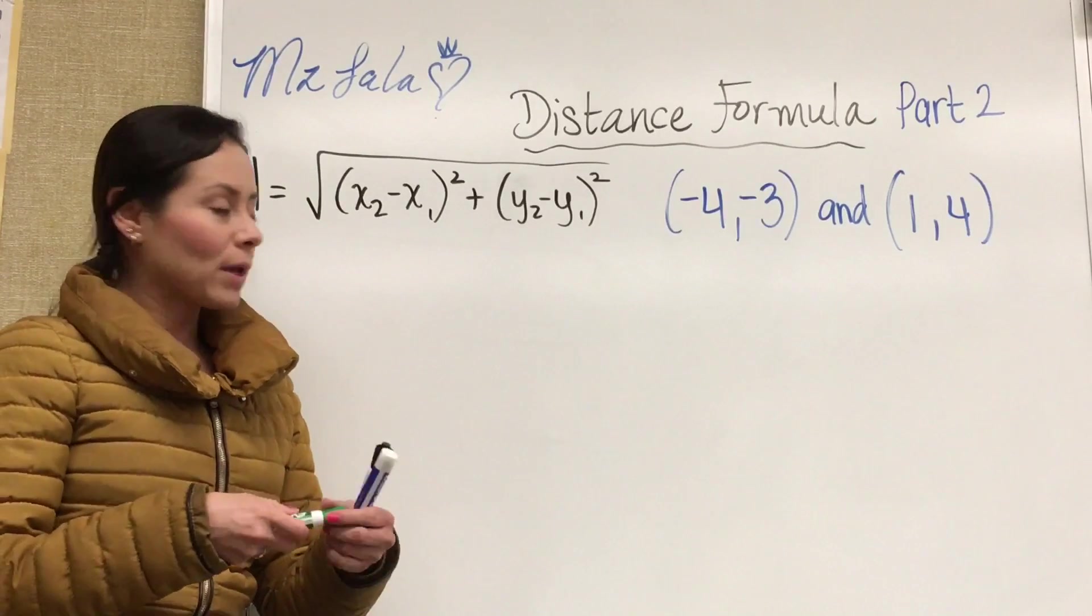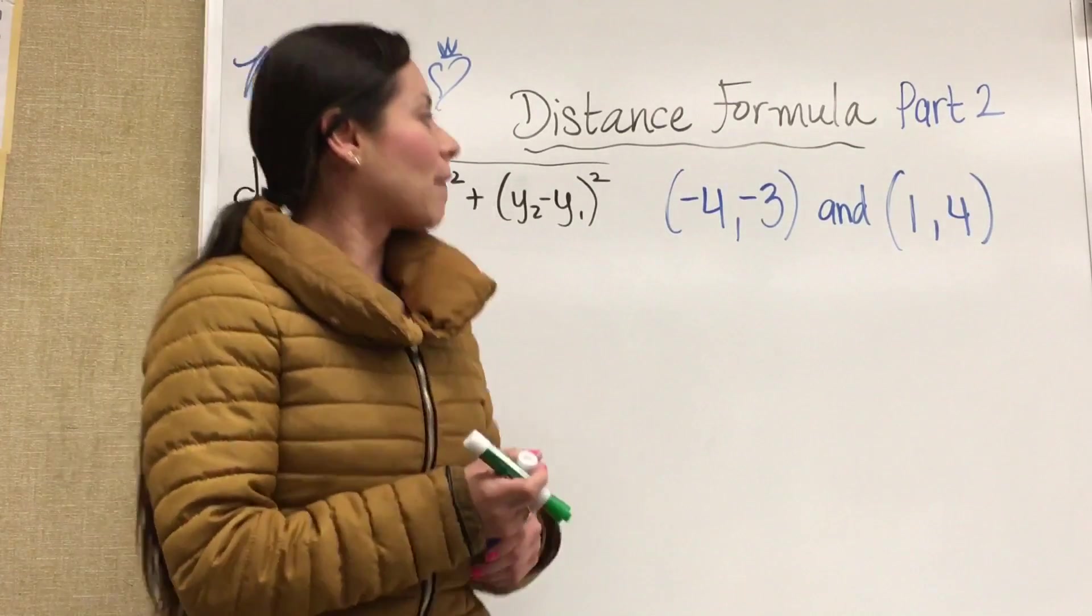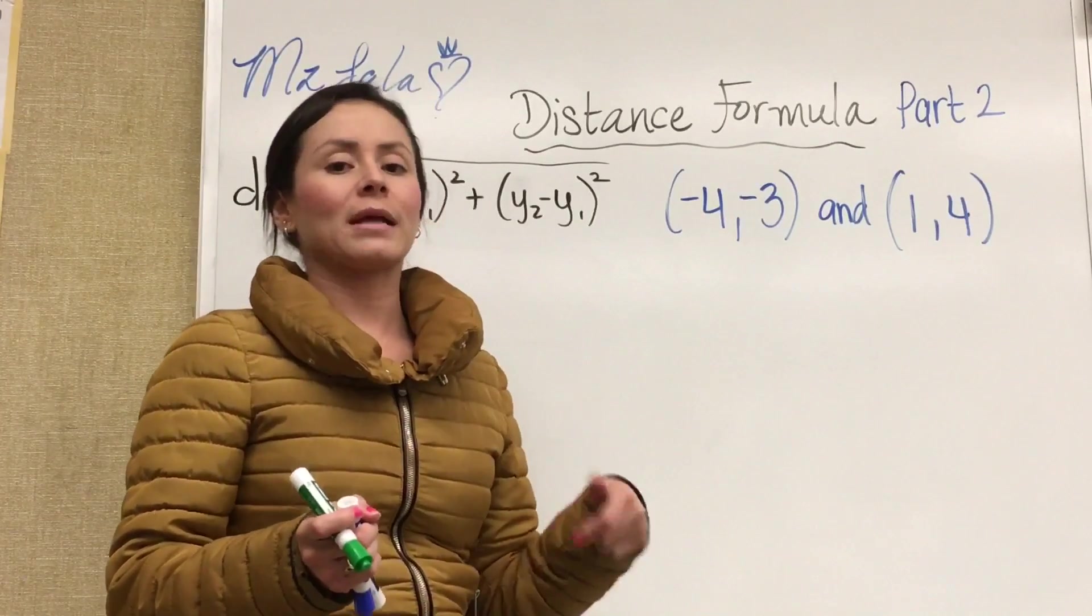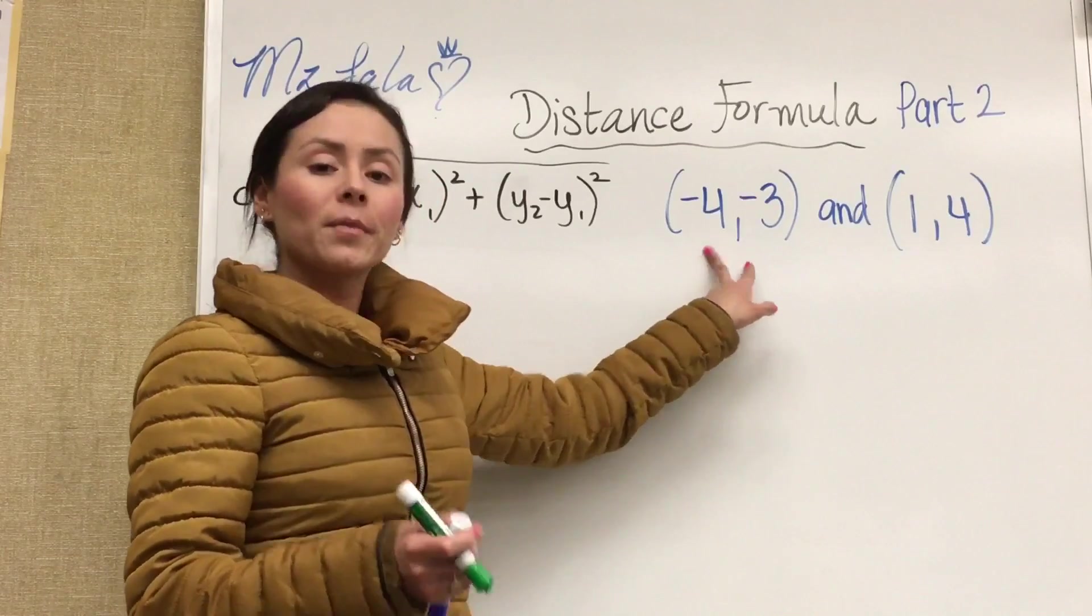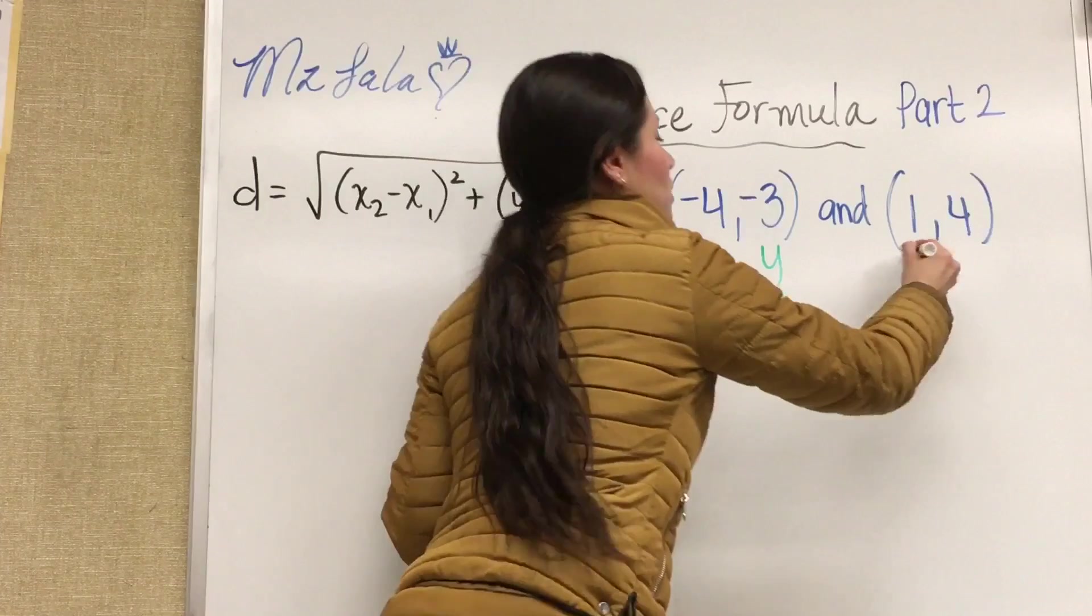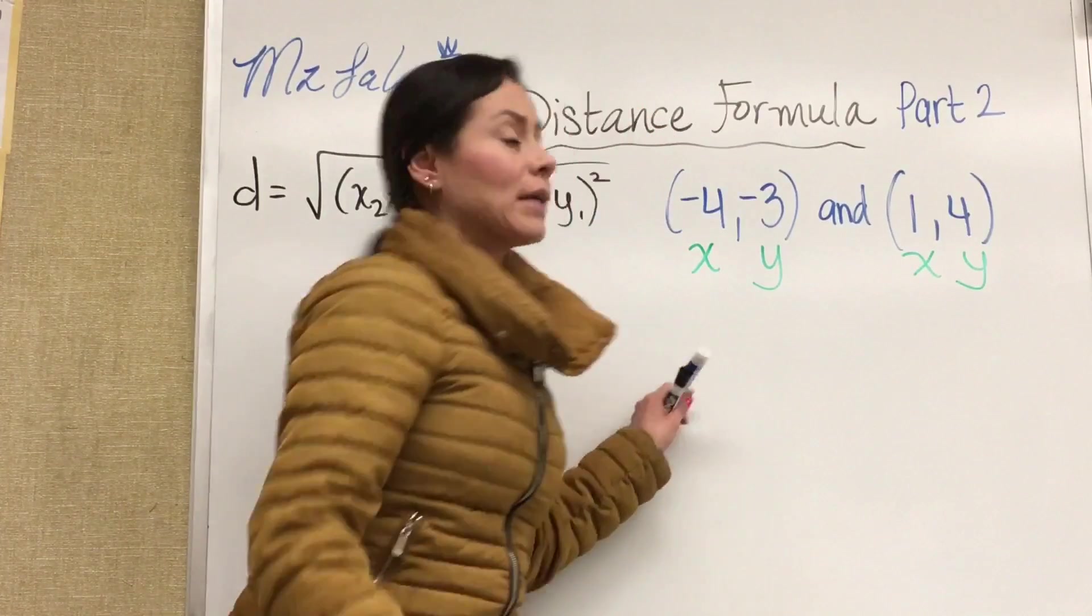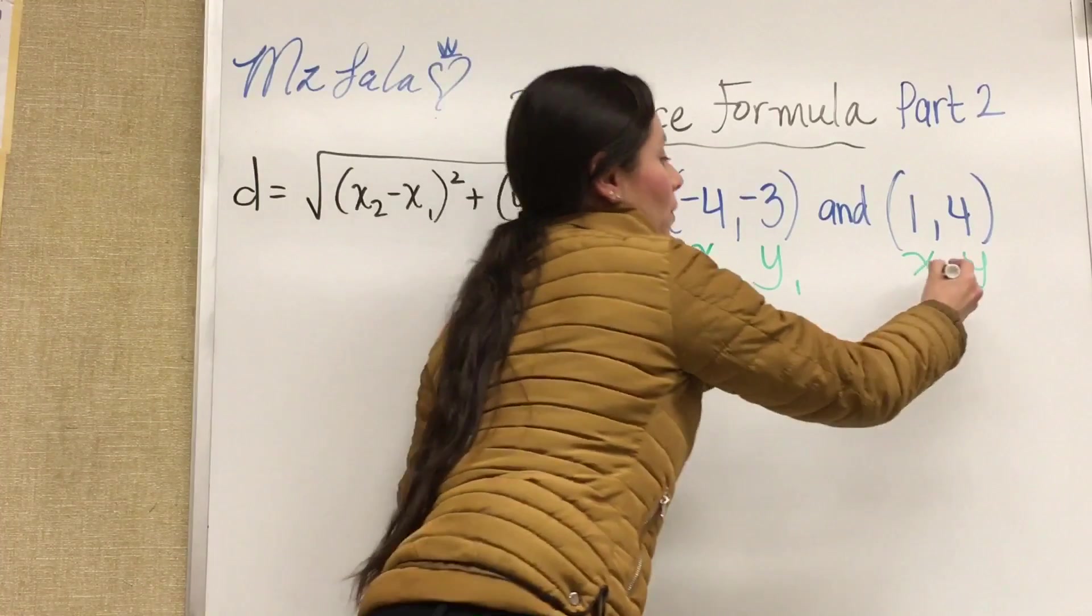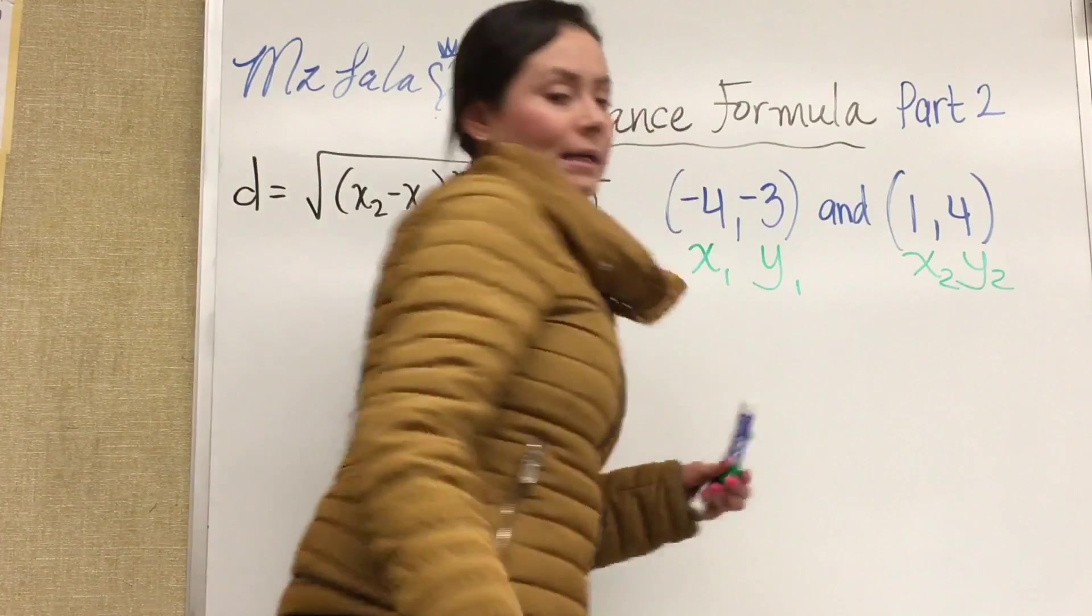So the first thing we must do is identify who is your first X, your second X, your first Y, your second Y. So in an ordered pair we always have X and Y together, right? So this must be X and Y together and since this is the first one we're gonna call this X1, Y1 and then we're gonna call this X2, Y2.